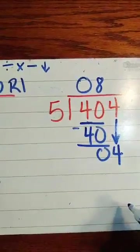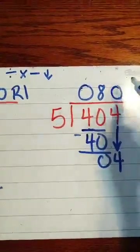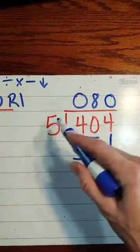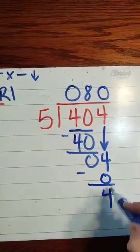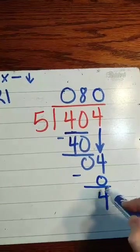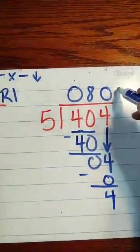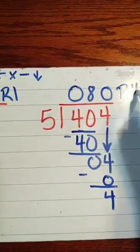Will 5 go into 4? No, so we put a 0 right above that. 0 times 5, 0, subtract. Nothing else to bring down, so what do we do with this number? You're right, we have to bring it up here, we put remainder 4.